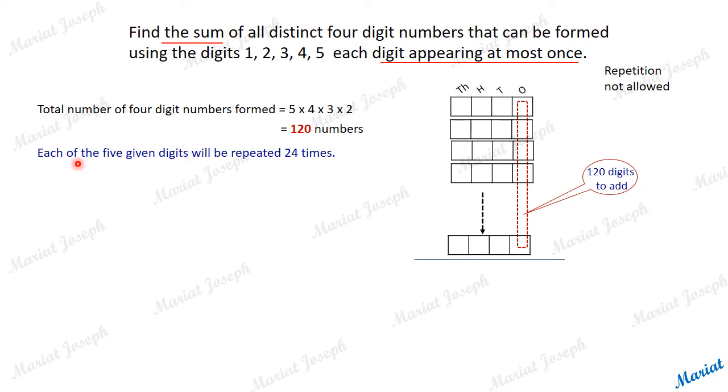So, each of the five given digits will be repeated 24 times. There is no priority to any of the digits, that's why an equal distribution. Each of the digits will get 24 times to appear. Now, how to add it?